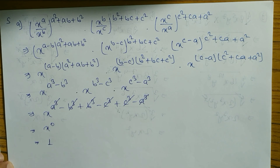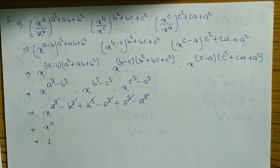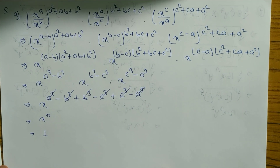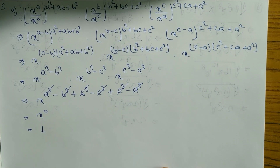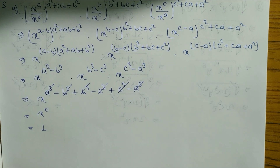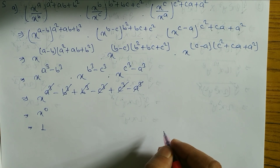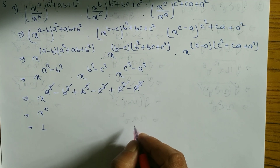Now a cubed and a cubed cancel, c cubed and c cubed cancel, b cubed and b cubed cancel. x to the power 0 is equal to 1. So the answer is 1.